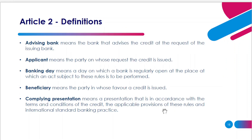First, we have Advising Bank. The Advising Bank is the bank that will advise the letter of credit to the beneficiary on the request of the issuing bank. This bank receives the letter of credit from the issuing bank and can either decide to add their confirmation or just advise the letter of credit as it is. If they just advise it, they remain the advising bank. If they add their confirmation, they also become the confirming bank.